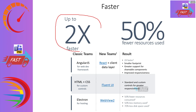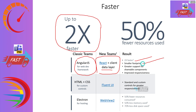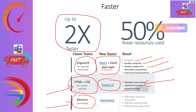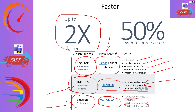Microsoft claims the new Teams client is 2x faster. It is using React plus a client data layer instead of AngularJS, giving a 2x faster experience, smaller footprint, greater support for shareable components, and improved responsiveness. Microsoft Teams moved away from HTML and CSS to Fluent UI, and moved away from Electron for hosting to WebView2. This helped Microsoft reduce 50% resource consumption, 50% less memory, and 70% less hard disk space.